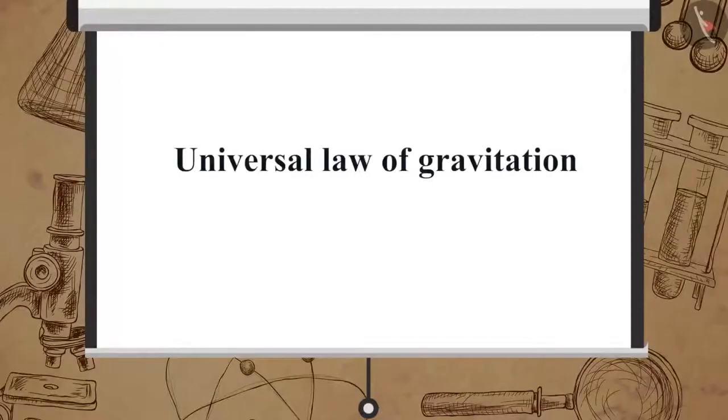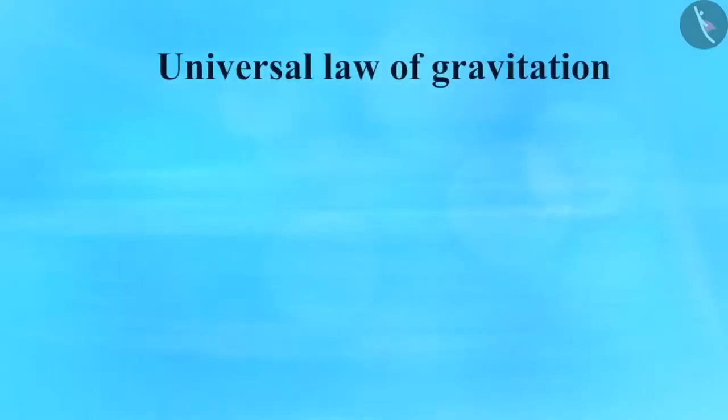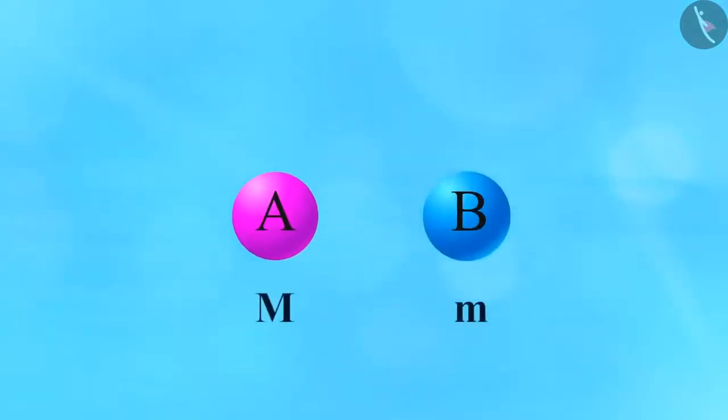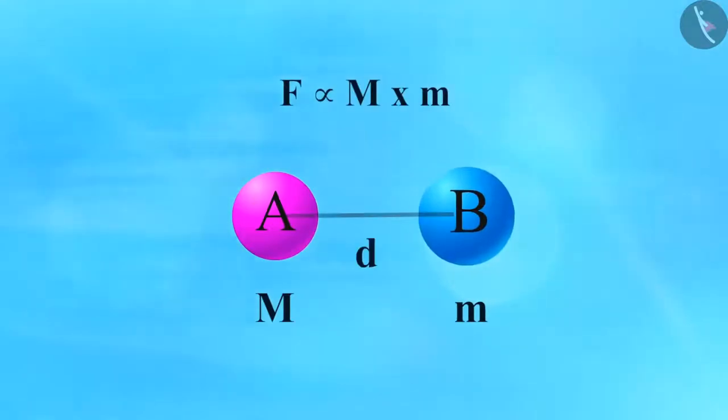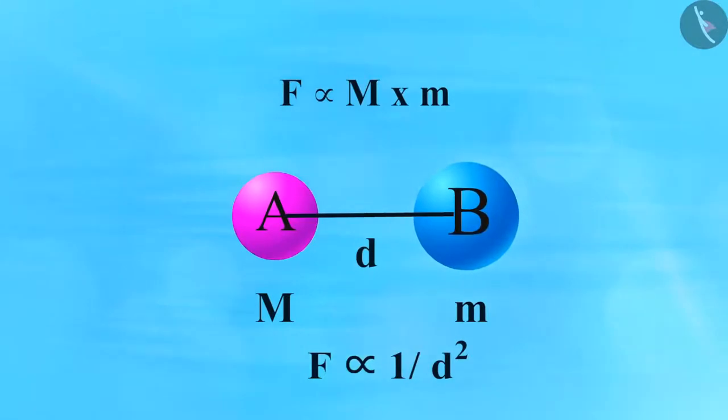Now, let us understand what exactly is the universal law of gravitation. The universal law of gravitation states that the force between two objects in the universe is directly proportional to the product of their masses and inversely proportional to the square of the distance between them. The force is directed along the line joining the center of two objects.